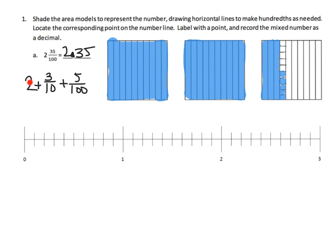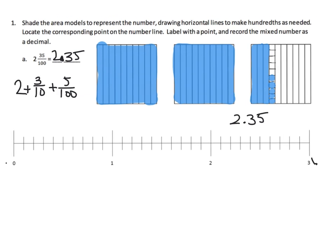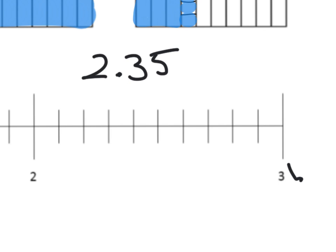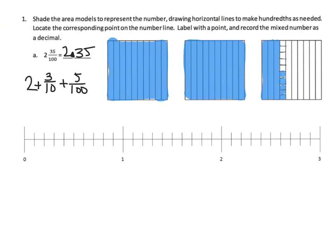Now where does this live on the number line? Two lives right here. I'm going to write two point three five right there because we'll need it. We're going to zoom in to find its location between two and three.